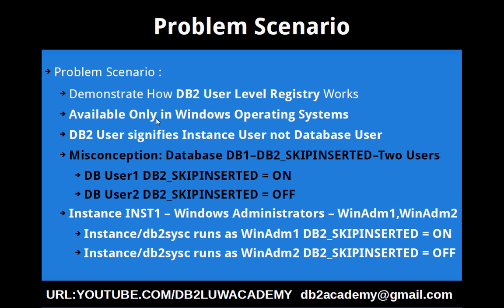For example, the misconception I had was: there is a database DB1 and there is a registry variable DB2_SKIPINSERTED, and there are two users who can connect to the database. So for DBUser1 the registry variable will be set to ON and for DBUser2 it will be set to OFF. This is how I understood it initially, but this is actually a misconception — I misunderstood it incorrectly. That's why I have shown it in black.